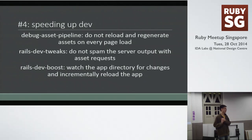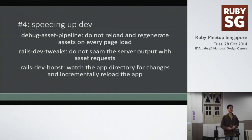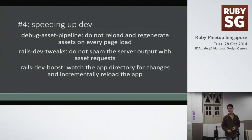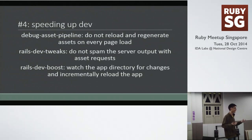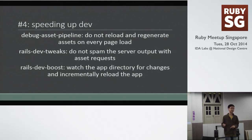The final one was the thing that actually improved my development time the most. When you run Rails in debug mode and you change something and reload a page, Rails scurries the entire directory, opens every single file, and checks whether it's changed. In my case this was particularly slow because opening files is not the fastest thing. What Rails Dev Boost does is the moment you change a file, it reloads it in the background — so by the time you request the page, it's already reloaded.